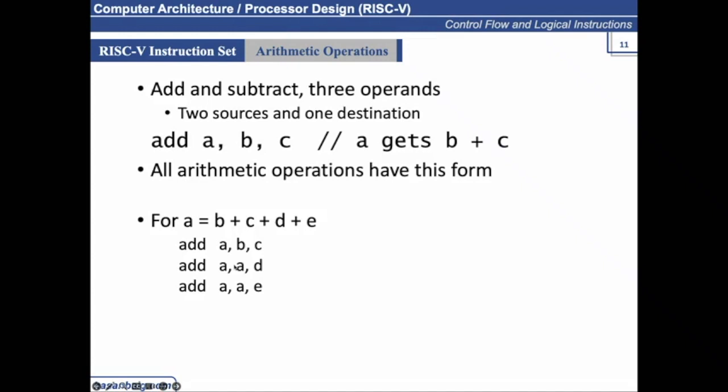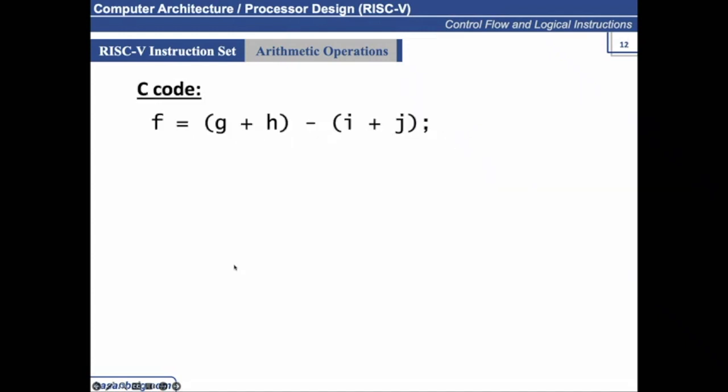We also discuss this simple instruction, a little bit complex: g + h minus i + j. The compiled RISC-V code would restore the results into a temporary variable first for the addition.